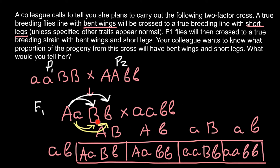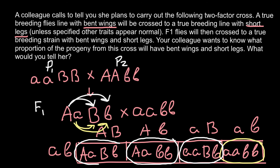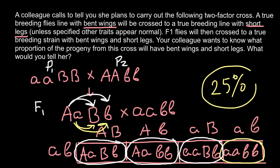Now let's answer the question: what proportion of progeny will have bent wings and short legs? Looking at the Punnett square, only the aabb genotype produces the phenotype of bent wings and short legs. The other genotypes give bent wings with normal legs, normal wings with short legs, or normal wings and normal legs. So our answer is 25% of all progeny will have bent wings and short legs.